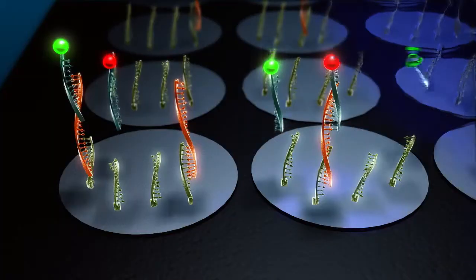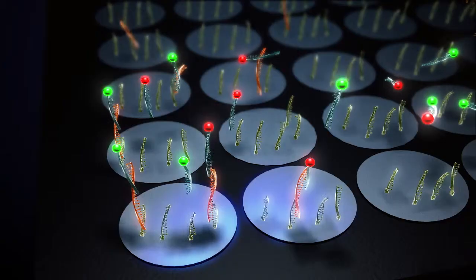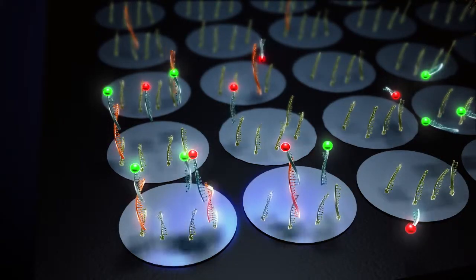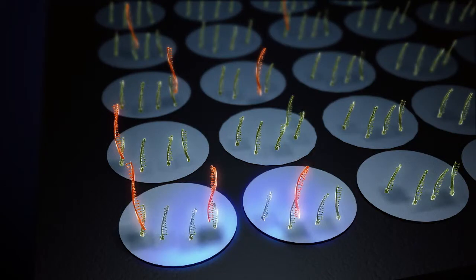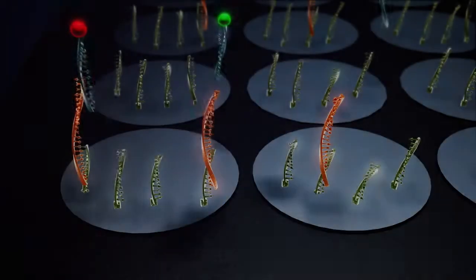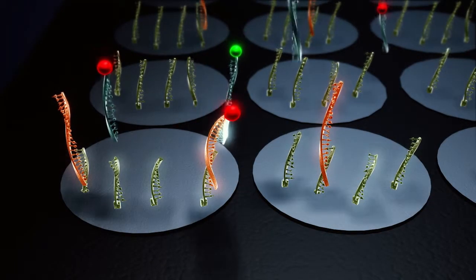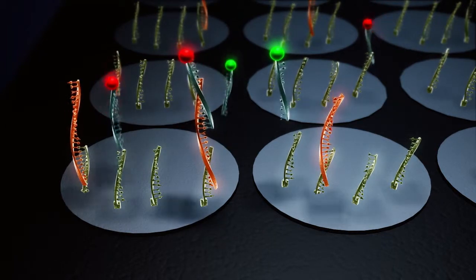Excess probes are washed away and an advanced imaging system detects the bound reporters at different wavelengths. After image acquisition, a thermal stripping process removes the reporters while leaving the amplicons in place. A new set of reporters is applied and the process repeats as many times as required for each specific application.